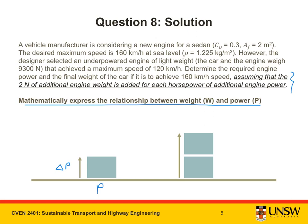This represents the change in power. The change in weight is expressed by this diagram here because we know that two Newtons of additional engine weight is added for each horsepower of additional engine power. So for each horsepower of additional engine power, we have two Newtons of additional engine weight. On the right hand side, we have our change in weight. And on our left hand side, we have our change in power.